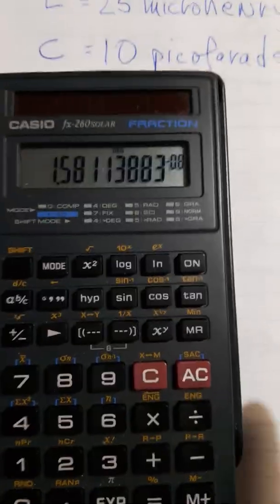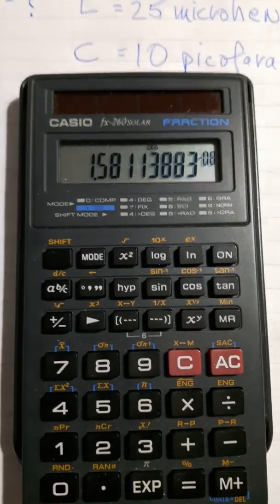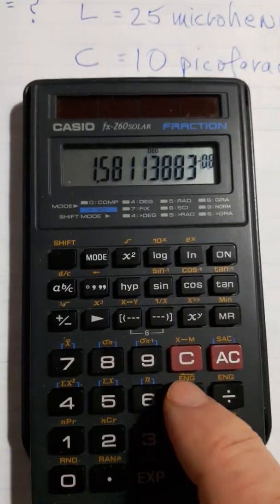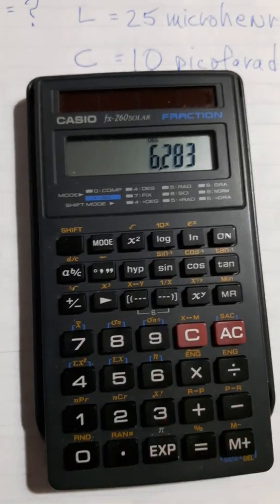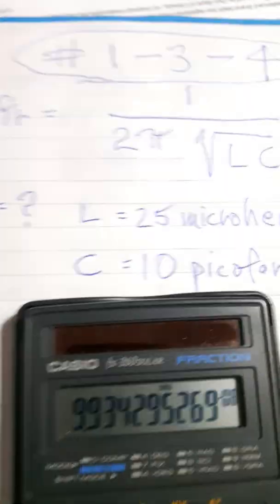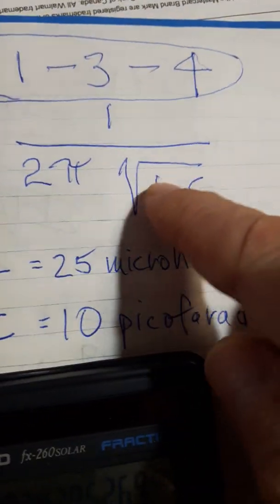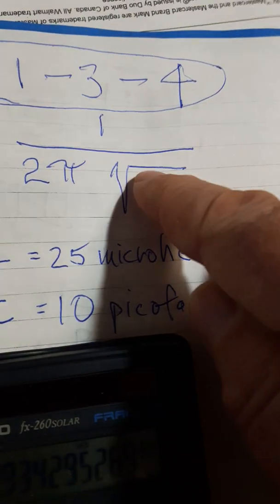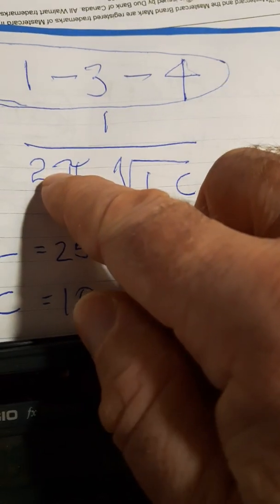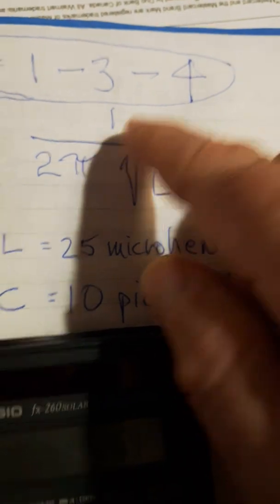Now multiply by 2π, which is 6.283, times 6.283 equals. Now we just have to take the reciprocal, right? So we've multiplied L times C, taken the square root, multiplied by 2π, now we're going to take 1 over it.